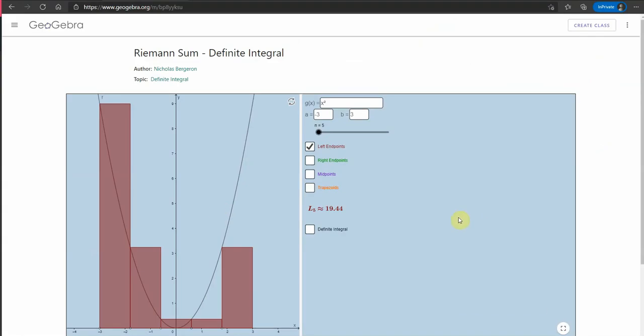I'm going to use this GeoGebra activity that I found on the internet to demonstrate that. Here we have the curve y equals x squared, and at the moment I've got n is 5. n represents the number of strips here. We are trying to find the area between minus 3 and 3, those are the limits I've chosen. One way of doing that is to split this area up into strips. Now there's different ways we could do that. We could use trapezia or trapezoids.